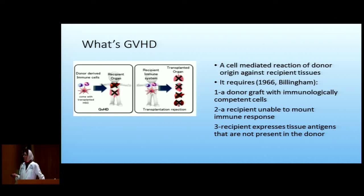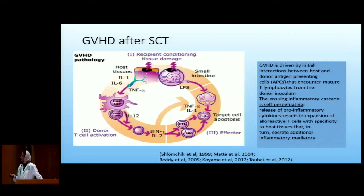So what is graft-versus-host disease? Most of our knowledge is related to stem cell transplant, not really solid organ transplant. But since 1966, we know that we need a donor graft that is active and immunologically competent, and then a recipient that cannot fight this donor — which is immunosuppressed — and then some difference between the two. If the donor cells are more active than the recipient, we will have graft-versus-host disease. If it's the opposite, we will have rejection.